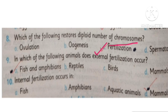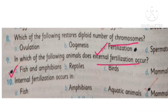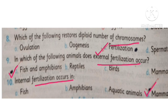MCQ number 9: In which of the following animals does external fertilization occur? In amphibians and fishes, external fertilization exists. MCQ number 10: Internal fertilization occurs in mammals.